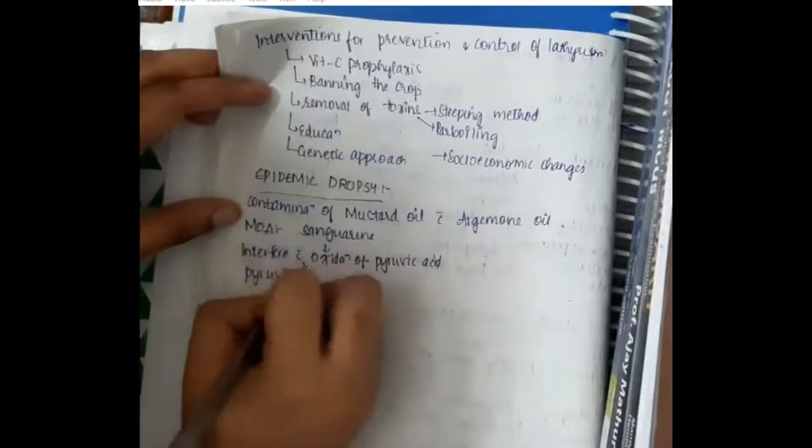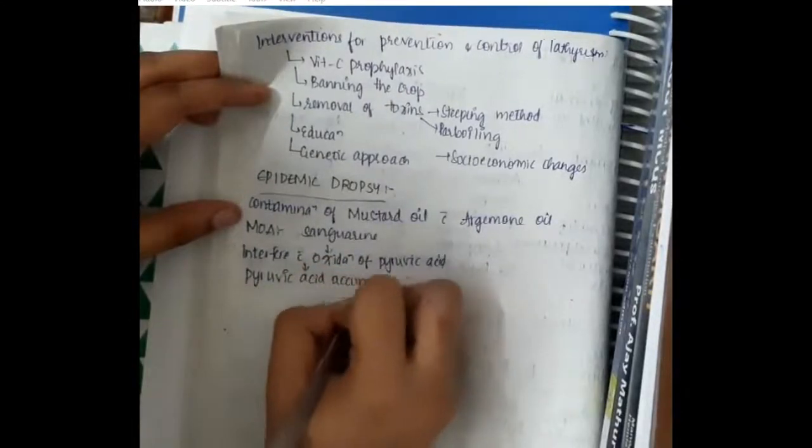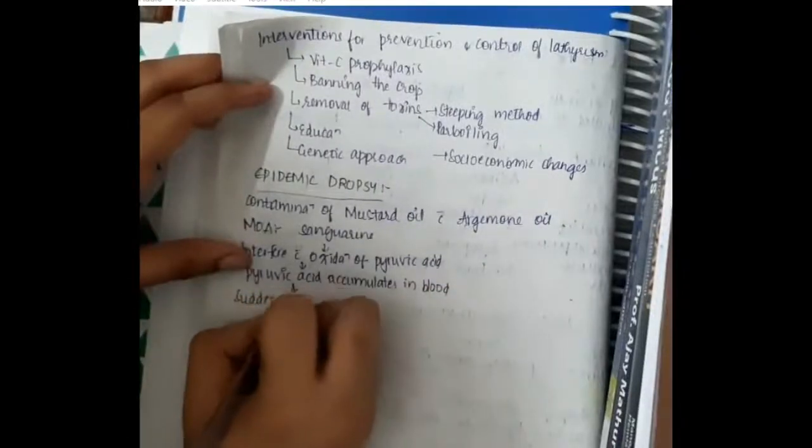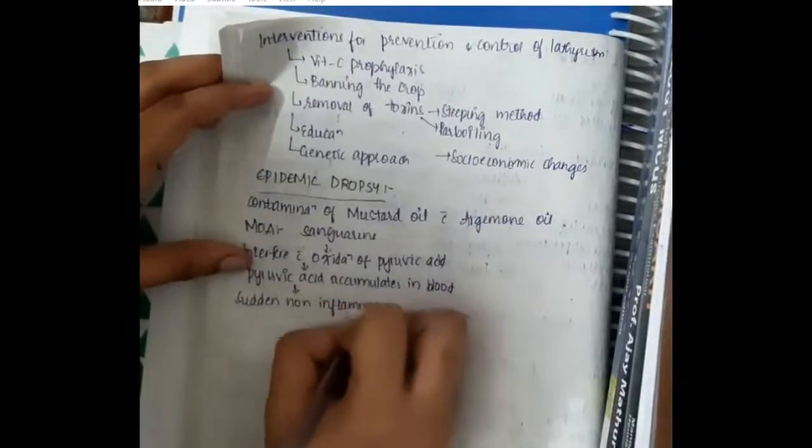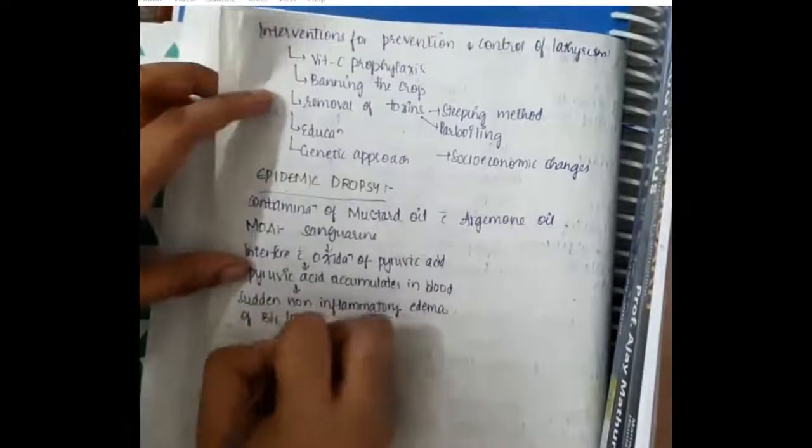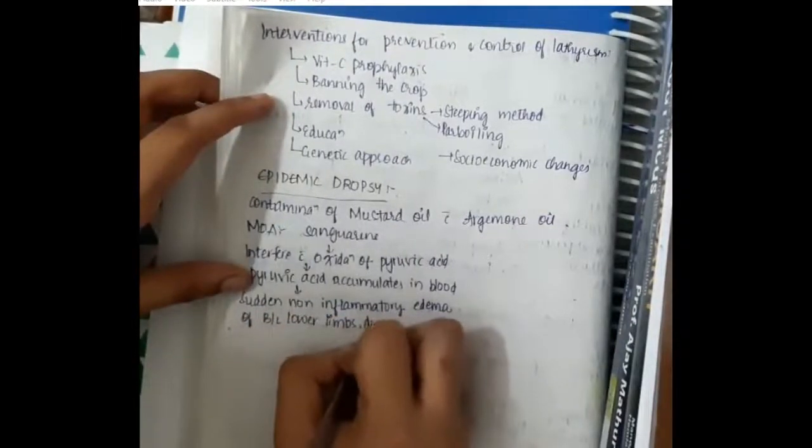Because it interferes with oxidation of pyruvic acid, pyruvic acid accumulates in the blood which will cause sudden non-inflammatory edema of bilateral lower limbs.